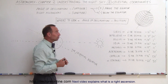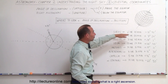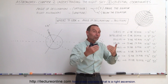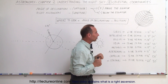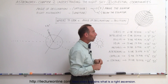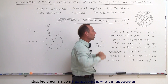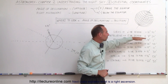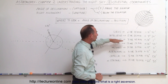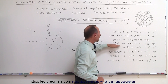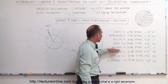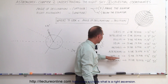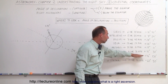Sirius is at minus 16 degrees — it's in the southern portion of the celestial sphere, below the celestial equator. Betelgeuse is 7 degrees above. Pollux is 28 degrees above. Vega, 38 degrees. Arcturus, 19 degrees. Aldebaran, 16 degrees. Capella, 46 degrees.